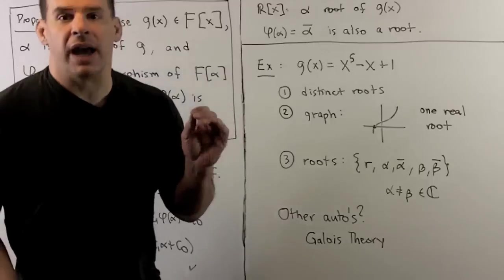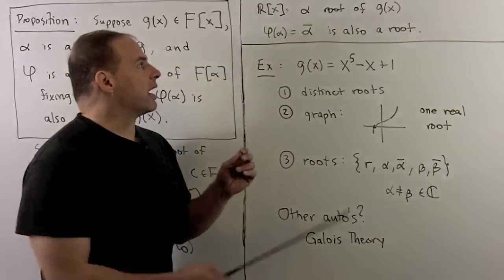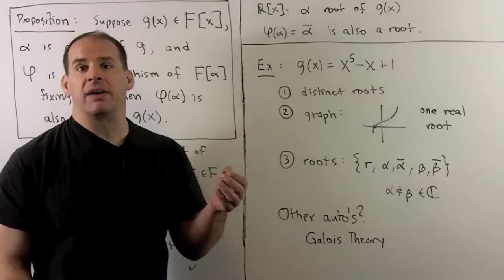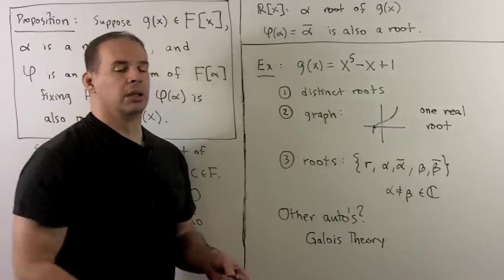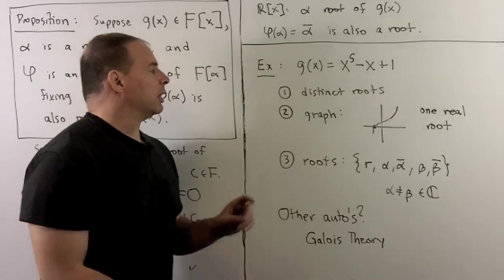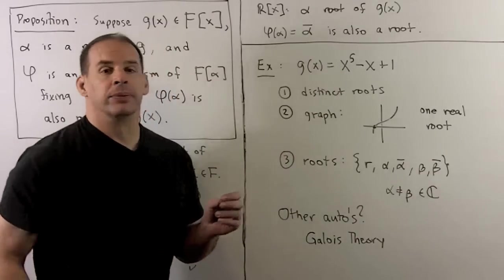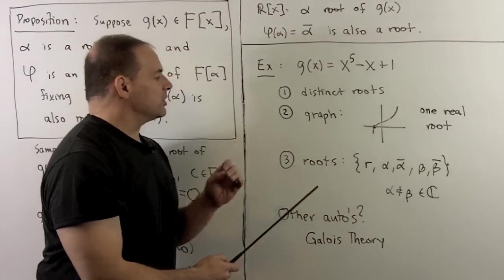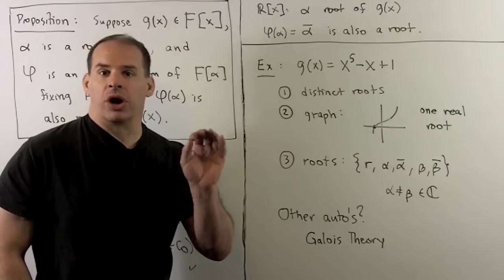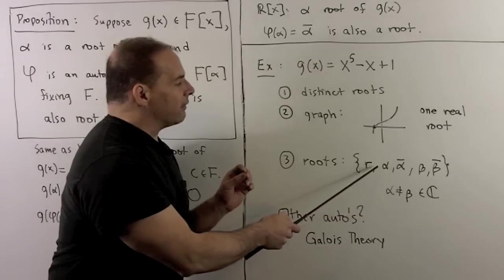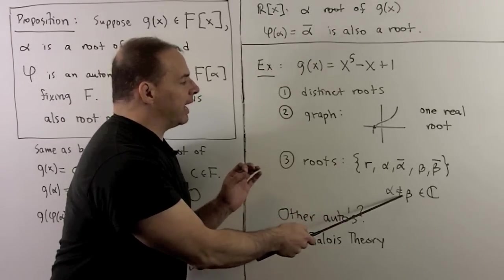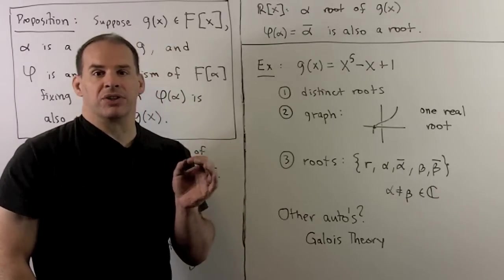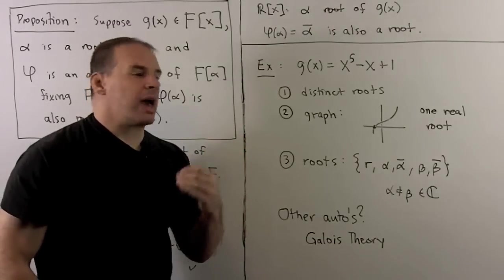With that, we know the non-trivial automorphism of ℂ over ℝ is complex conjugation. So whenever α is a root of a real polynomial, φ(α) = ᾱ is also a root. Returning to the example g(x) = x⁵ − x + 1: it has distinct roots. From the graph it has exactly one real root R, and its non-real roots occur in conjugate pairs: α, ᾱ, β, β̄, where α ≠ β. To find better relations among these roots we would want other automorphisms, but we don't have enough theory yet — we'll get to that when we do Galois theory.